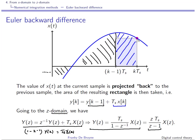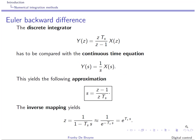In English, we say that the value of X is projected back. The idea is now to compare this discrete-time integrator obtained using the Euler backward difference method to the continuous-time description of the integrator. We equate the transfer function in S with the transfer function in Z. This gives you the approximation rule: if you take your transfer function and replace S by (Z−1)/(Z·Ts), you obtain an approximate discrete-time description according to the Euler backward difference rule.